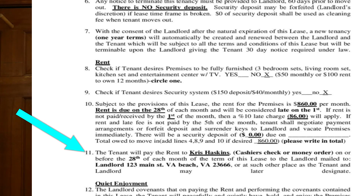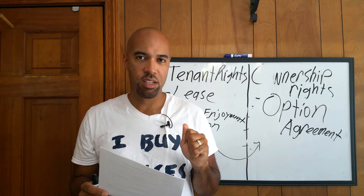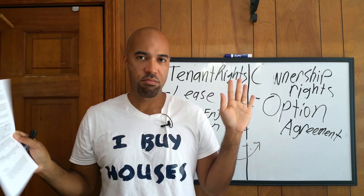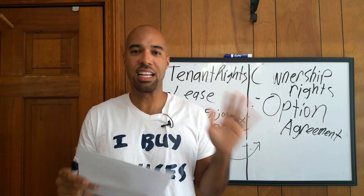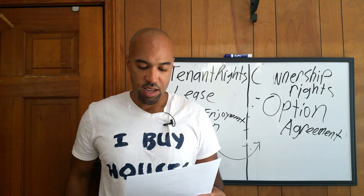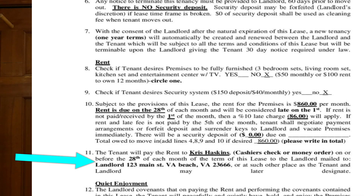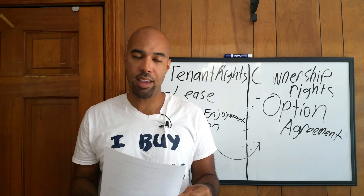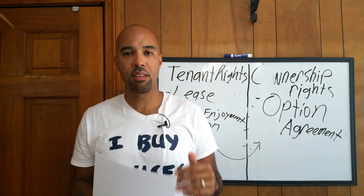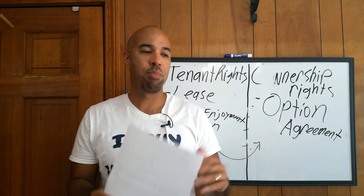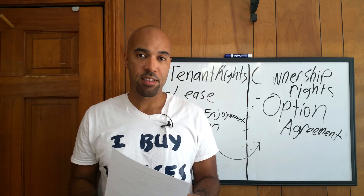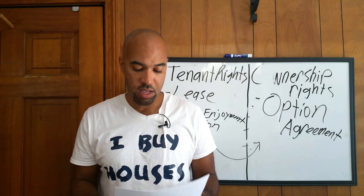Number eleven: rent shall be paid to me, Chris Haskins, by cashier's check or money order. We don't take checks — I cannot count how many checks have gone rubber on me in my career. Back in 2007 I said no more checks. Money order on or before the 28th of each month, mailed to the landlord at 123 Main Street. Or sometimes I give them my bank deposit slip so they can go right to the bank and deposit that money into the business bank account — you don't even have to worry about interfacing with them.